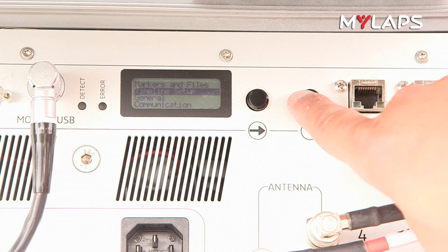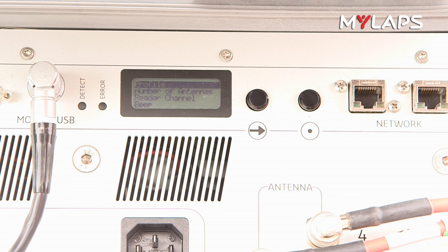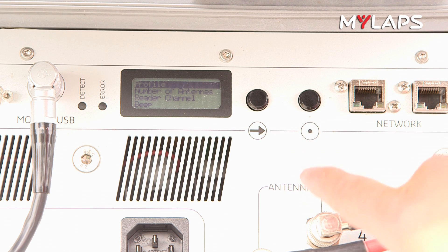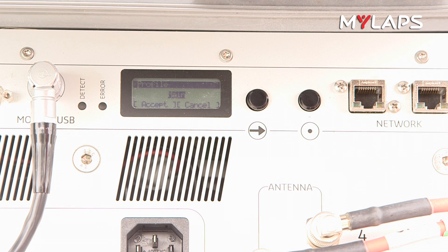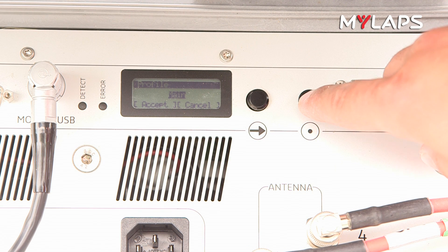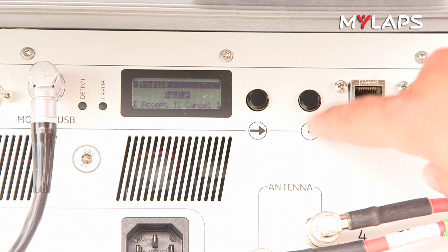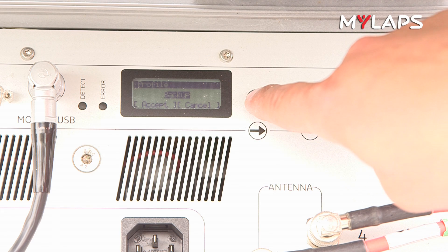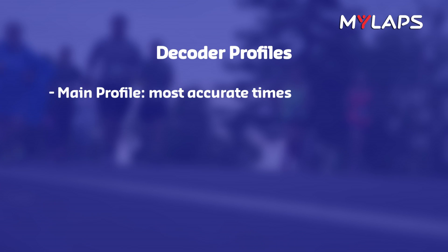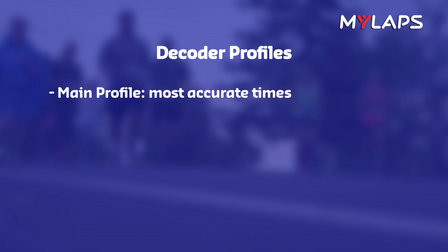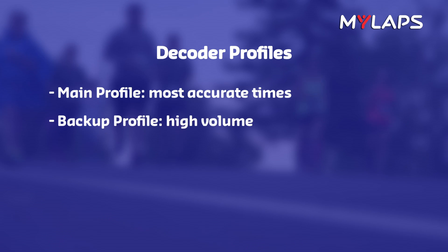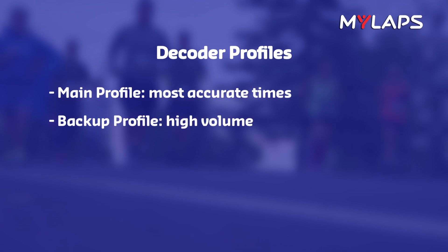Under Profile, you can set your decoder to Main or Backup. If this is the first bib tag system the runners will encounter, set the profile to Main. If this is a second bib tag system the runners will encounter, set the profile to Backup. The Main profile's priority is to measure the most accurate times — it detects on average 99.5% of runners. The Backup profile's priority is to detect high volume; at large events it will detect runners who might have been missed by the main line, so that all runners are detected at least once.